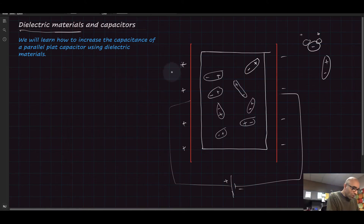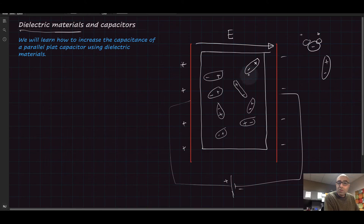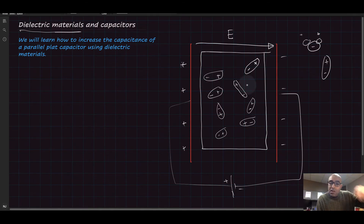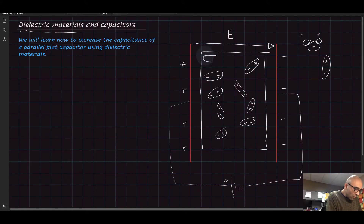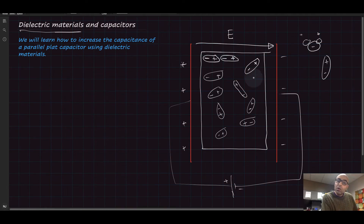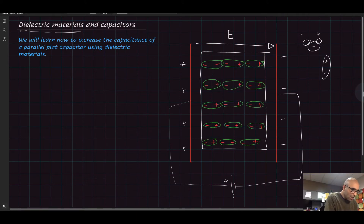But when they are exposed to an electric field, such as the uniform electric field from the capacitor, those dipoles respond to the presence of the electric field. The electric field goes through the insulating material and the dipoles start rearranging themselves to respond to it. The negative side of each dipole moves toward the positive plate, and the positive side moves toward the negative plate of the capacitor.